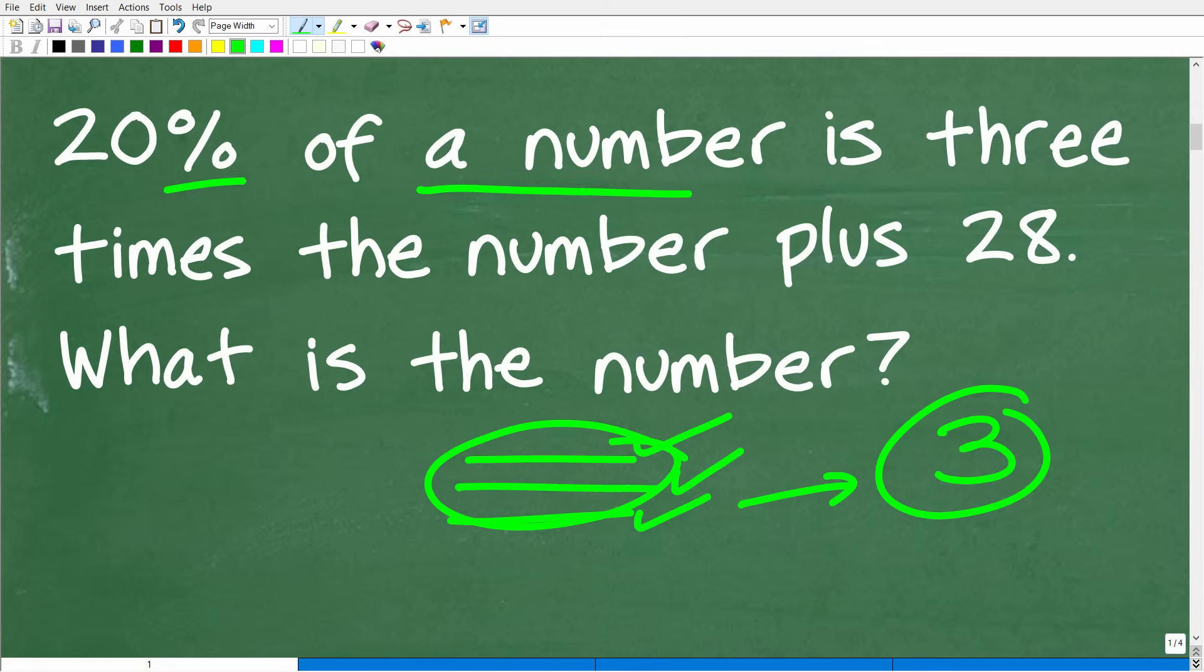So here we are dealing with percent, and we're talking about some number. Well, what is a number? We don't know what the number is, so using a variable like X is a good idea because a variable can represent a number. We want to translate this verbal situation into a mathematical situation. A lot of different skills going on here, things that hopefully you learned in your basic pre-algebra or algebra one courses.